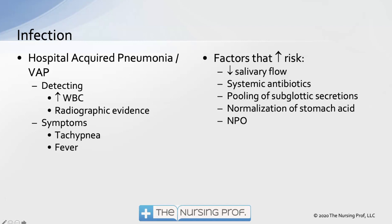Factors that increase VAP risk include decreased salivary flow. Patients on mechanical ventilation may be given medications during surgery to decrease salivary flow, and salivary flow is also stimulated by eating. If the patient isn't eating, they'll have decreased salivary flow. Salivary flow normally washes bacteria from the mouth down the esophagus into the stomach where acid kills it. Without that flow, bacteria can sit in the mouth and slowly slip past the endotracheal tube into the lungs.